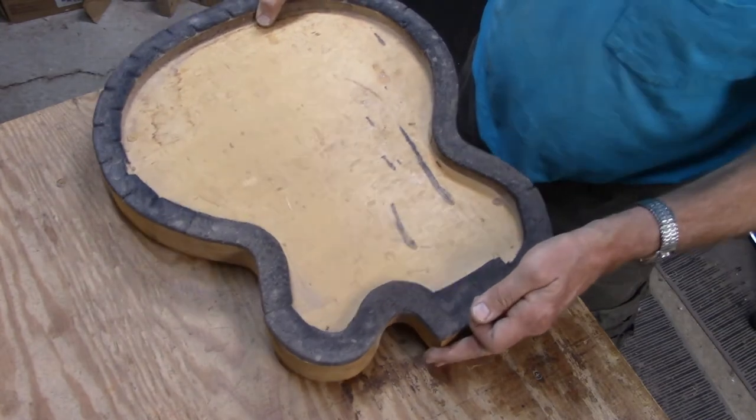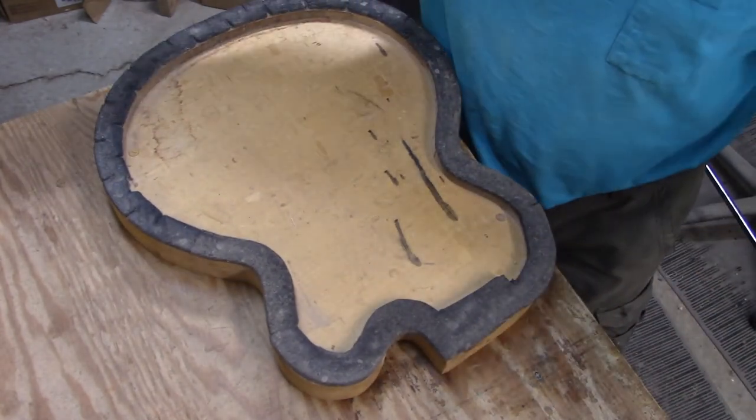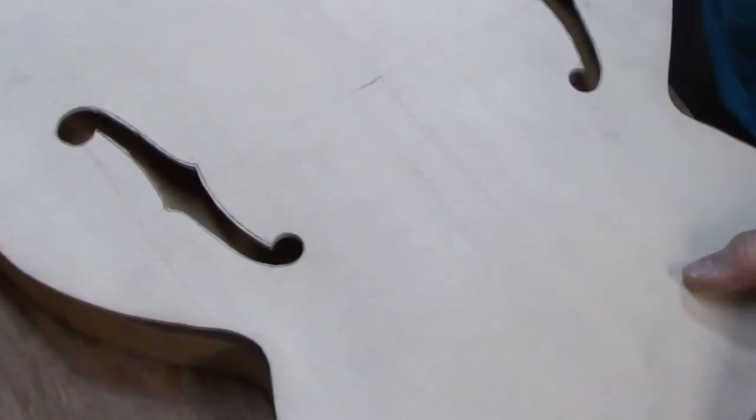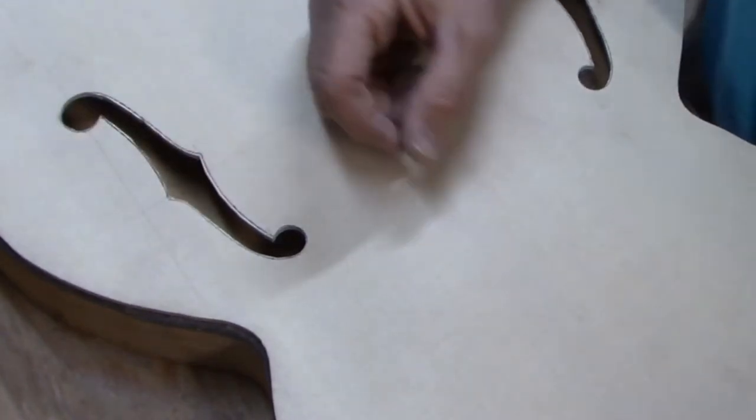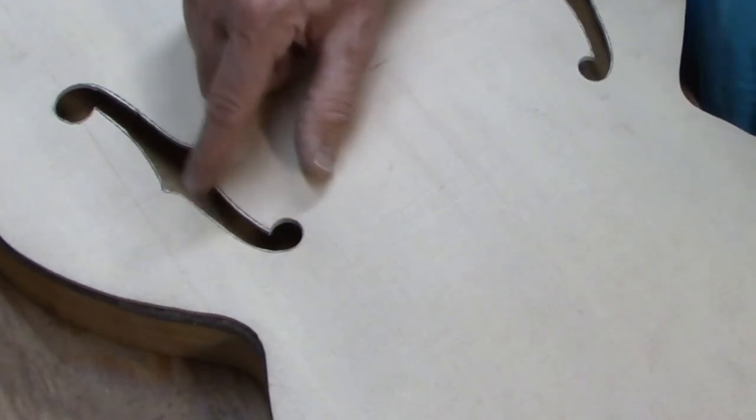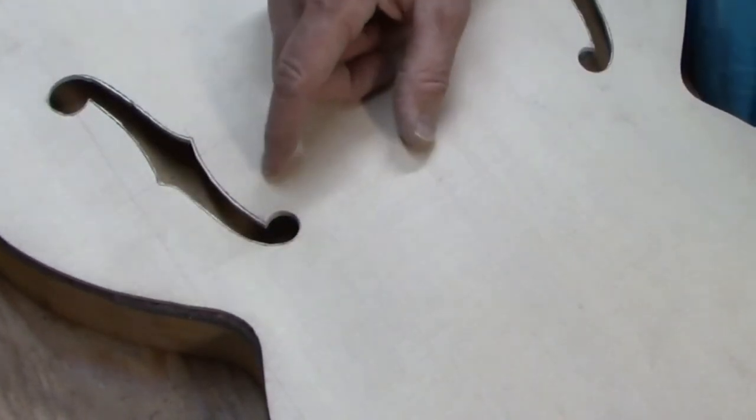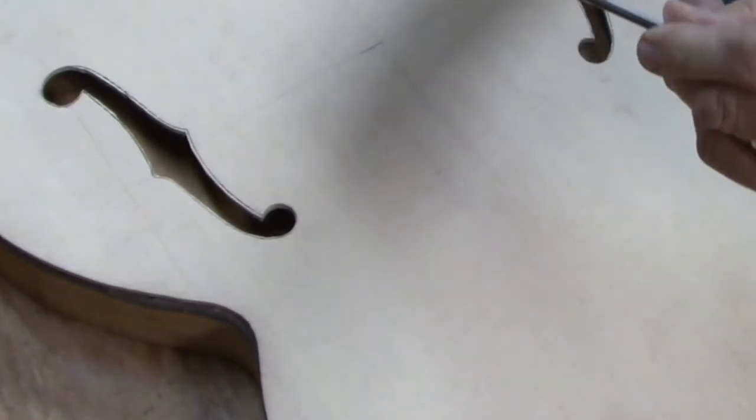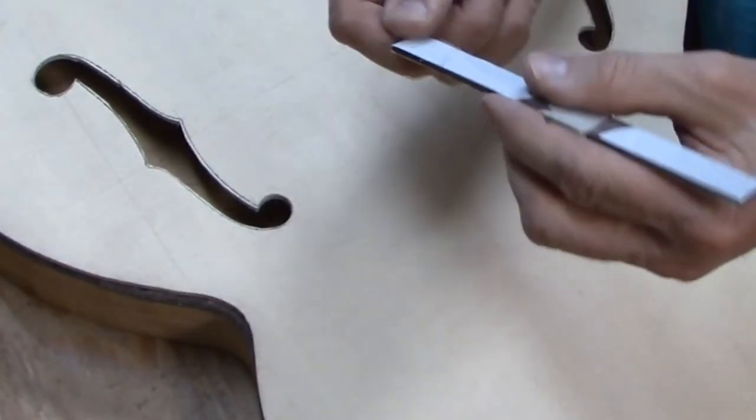Now what I'm going to do to smooth out these F holes—I know I said earlier I was going to file them, but files are actually pretty aggressive and they tend to tear out little chips in the wood. So what I really use is a stick with some 120 grit sandpaper glued to it.